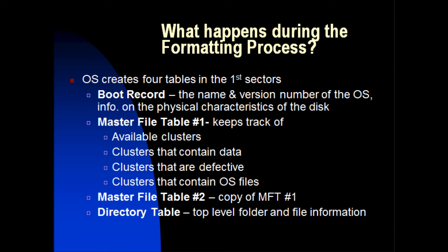What happens during the formatting process? The operating system creates 4 tables in the first sector. First, the Boot Record: contains the name and version number of the operating system and gives info on the physical characteristics of the disk. Second, Master File Table 1 (MFT1): keeps track of available clusters, clusters that contain data, clusters that are defective, and clusters that contain operating system files. Third, Master File Table 2 (MFT2): a copy of MFT1. Fourth, the Directory Table: the top-level folder that contains file information.